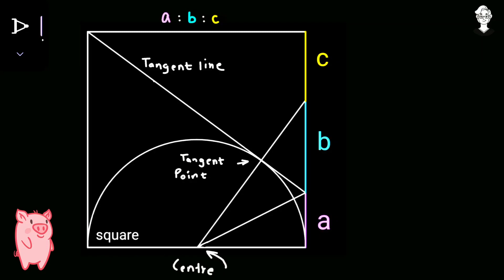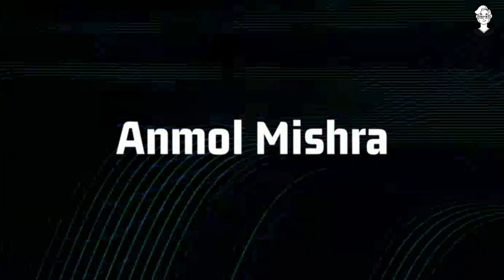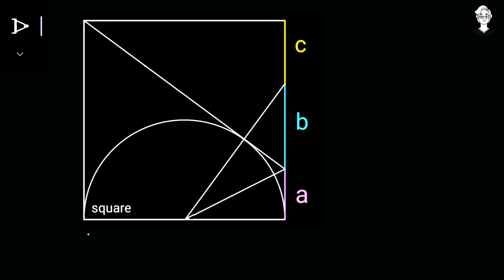Today we have a cool geometrical problem. The given data is very simple, but there are some points to be noted which I have mentioned on this diagram. We need to find the ratio of A to B to C. First of all, we will mark the side of the square — let the side of the square be a variable M.